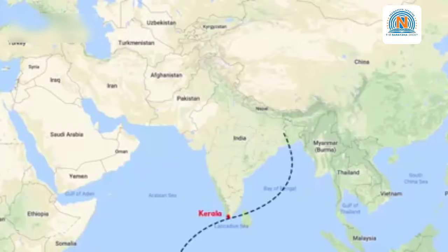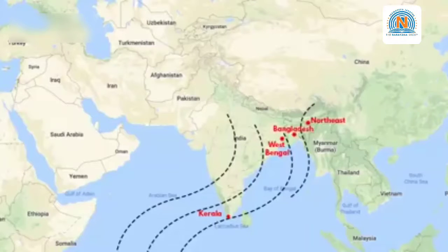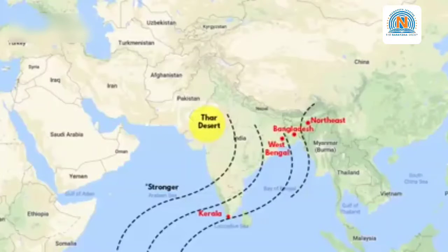Then the monsoon wind moves to the northern part of the country. The Bay of Bengal side of the monsoon flows over the Bay of Bengal region and heads towards the eastern Himalaya, giving rain to northeast India, Bangladesh, and West Bengal. The Arabian Sea branch of the monsoon is quite stronger compared to the Bay of Bengal branch, and the reason behind that is the existence of the Thar Desert — the region of Gujarat and Rajasthan. Always remember, Kerala is the first state in India to receive southwest monsoon rain.